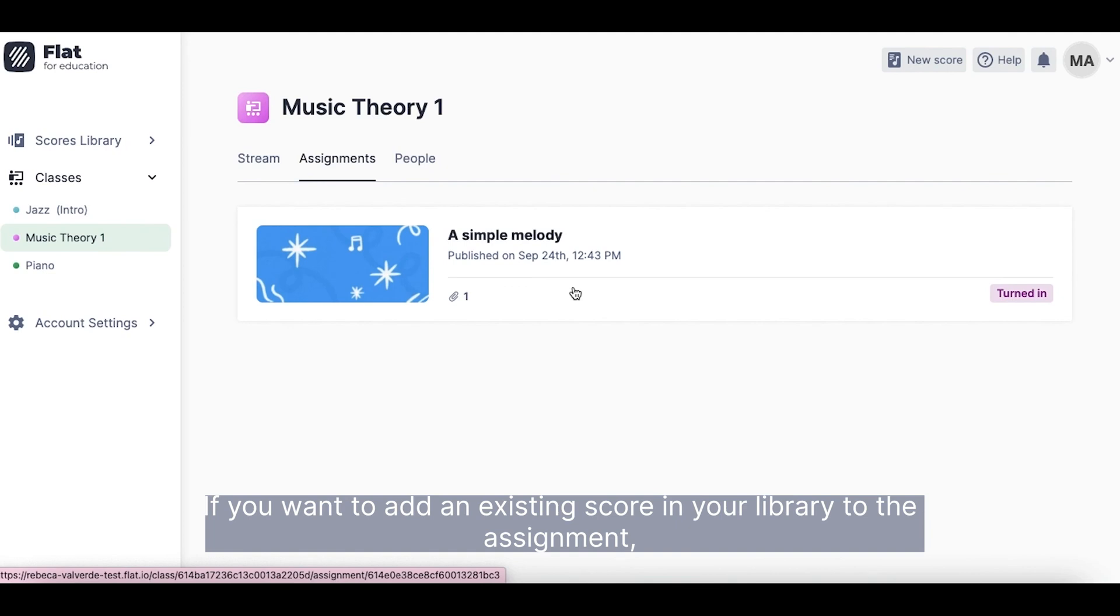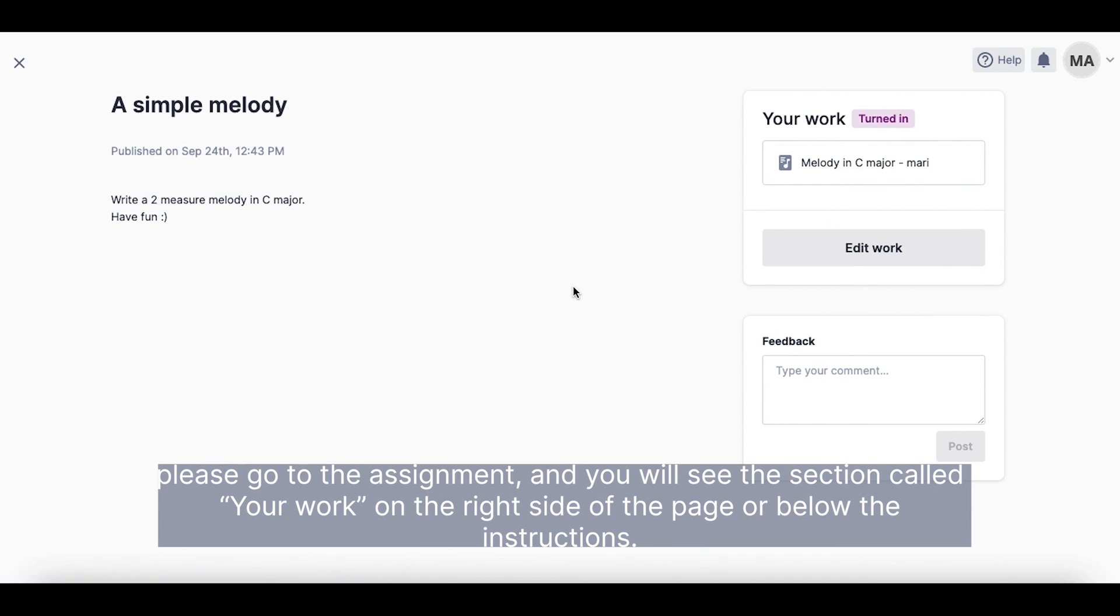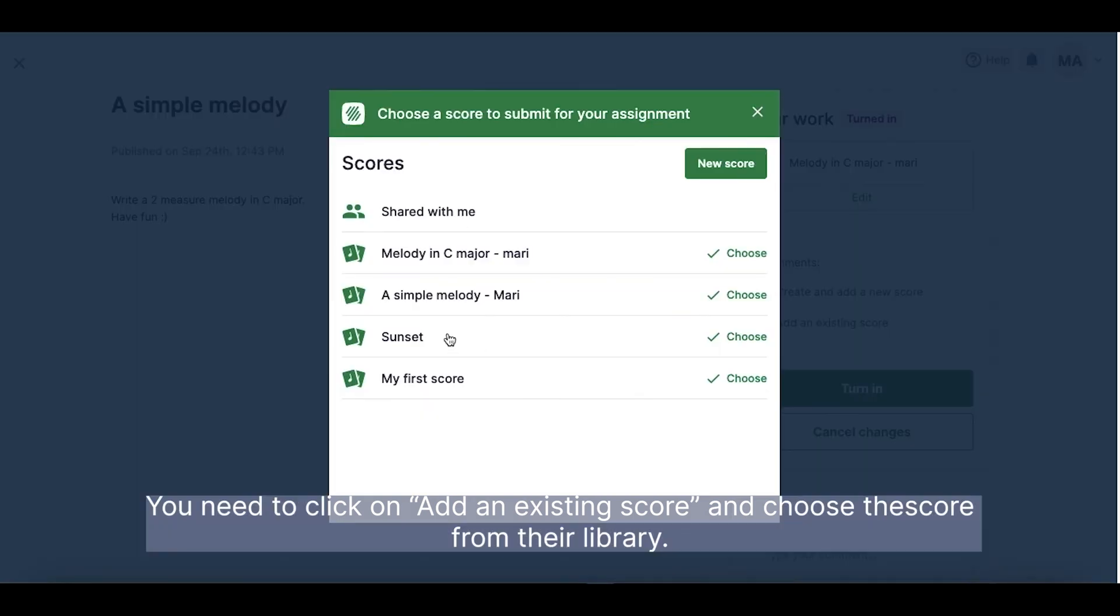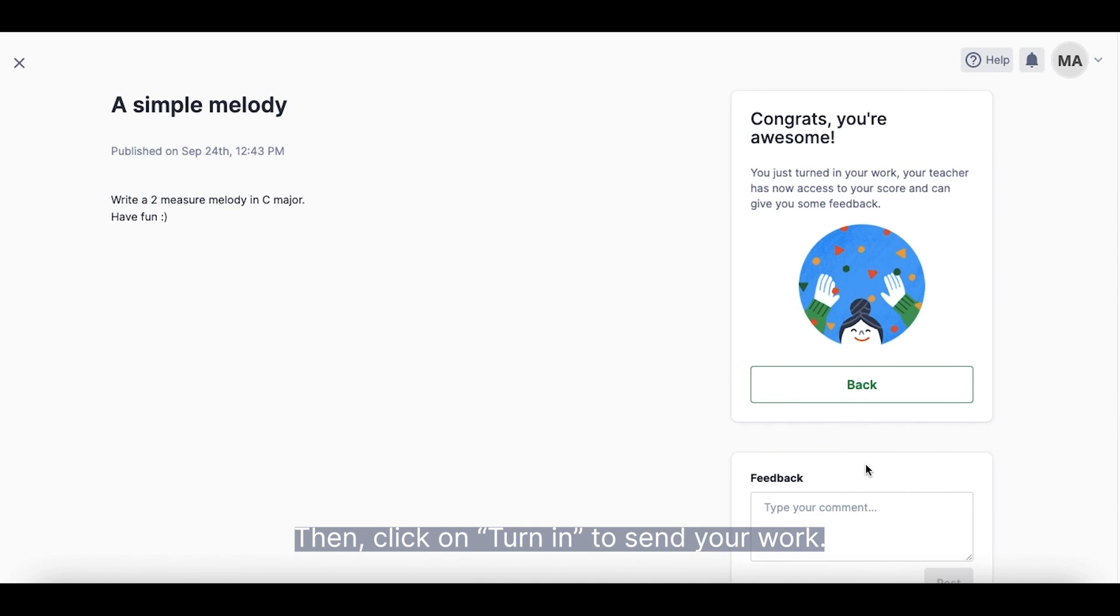If you want to add an existing score in your library to the assignment, please go to the assignment and you will see the section called Your Work on the right side of the page or below the instructions. You need to click on Add an existing score and choose the score from your library. Then, click on Turn In to send your work.